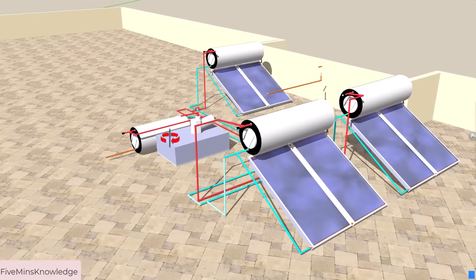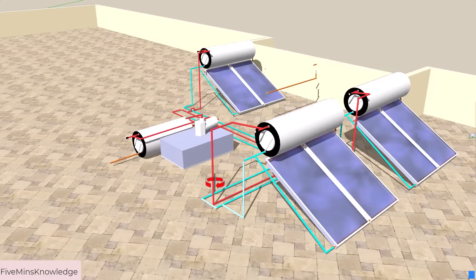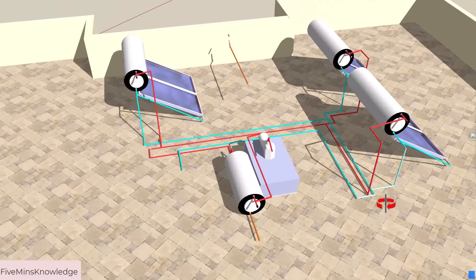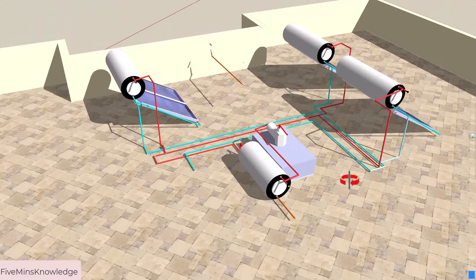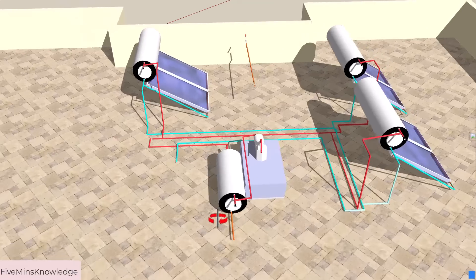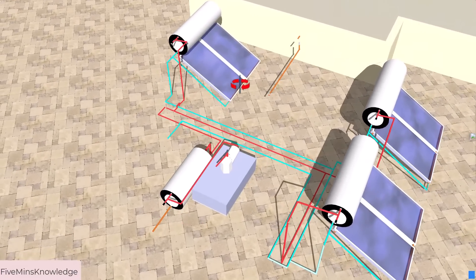Here is the main hot water reservoir tank. From here, hot water will be fed to the building. If you understand the working of any one of the heaters, you will understand the total heating system.